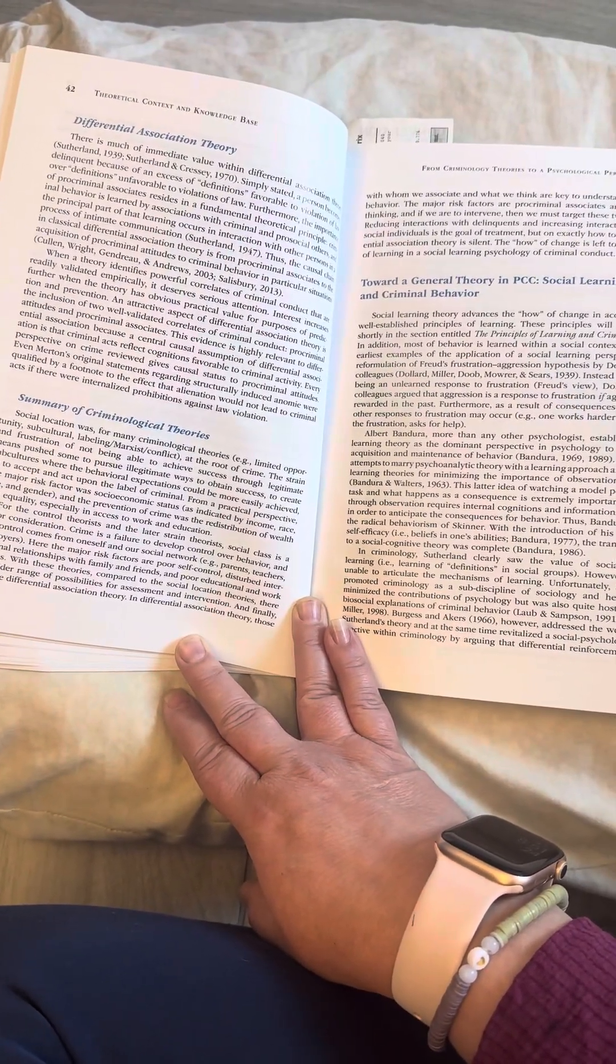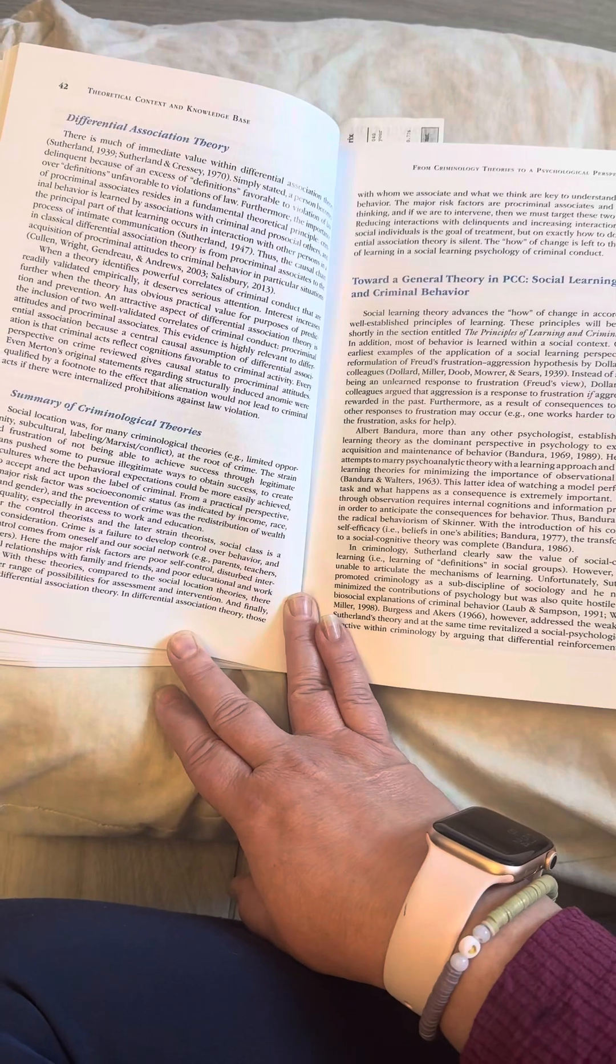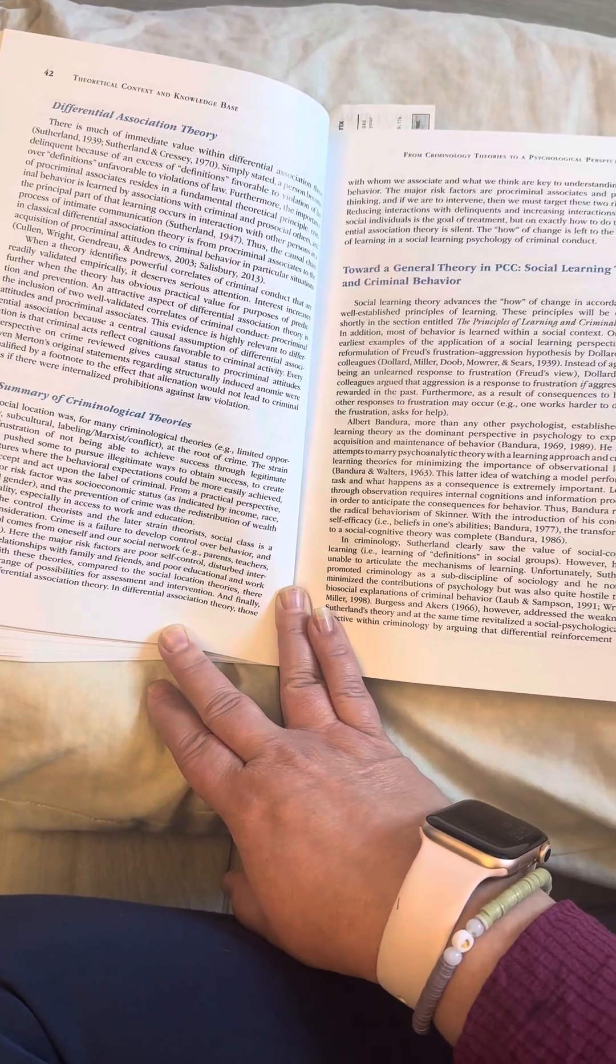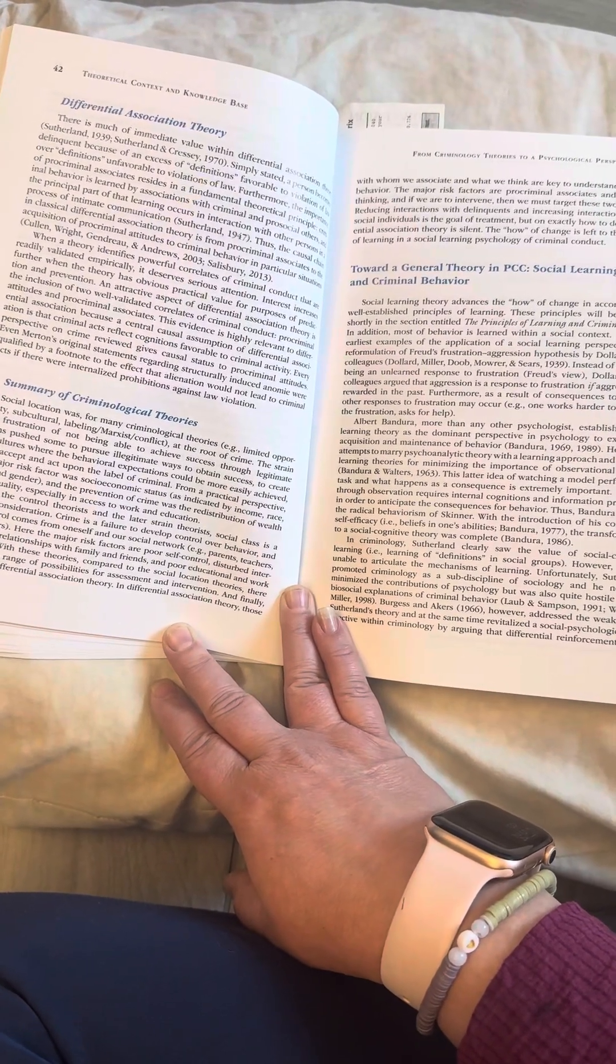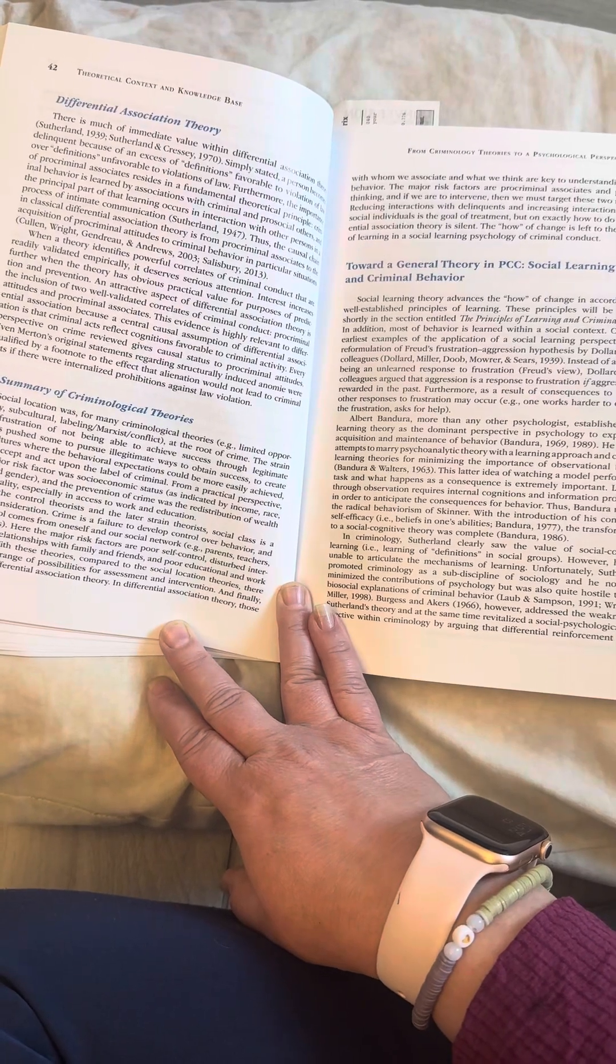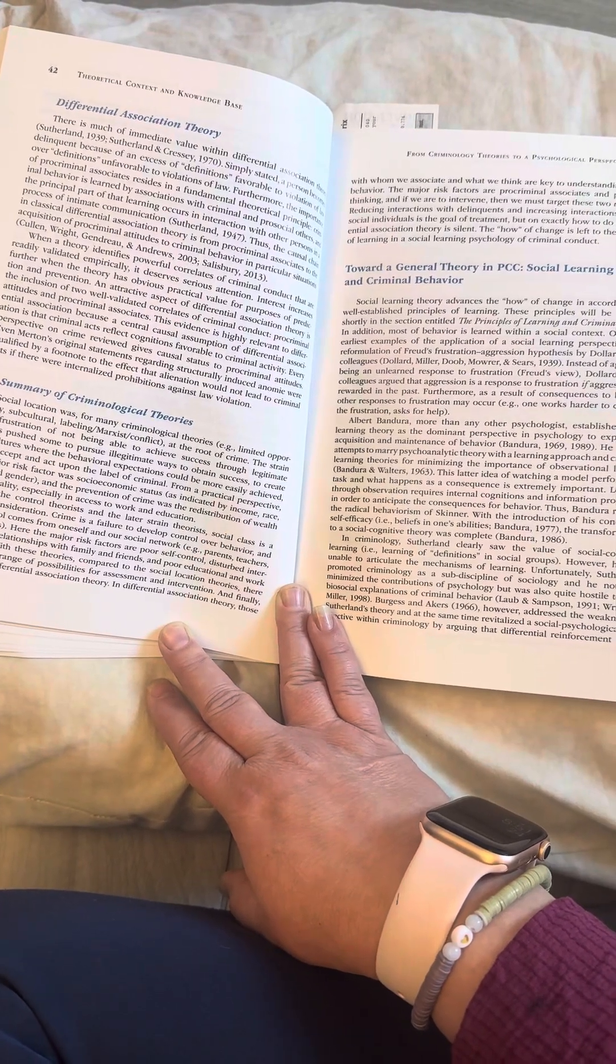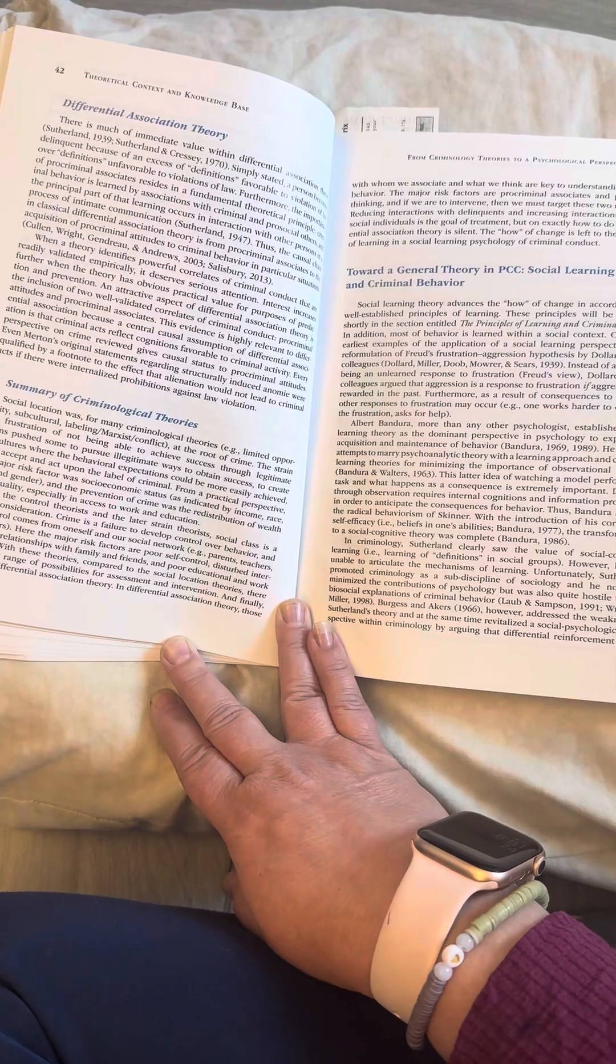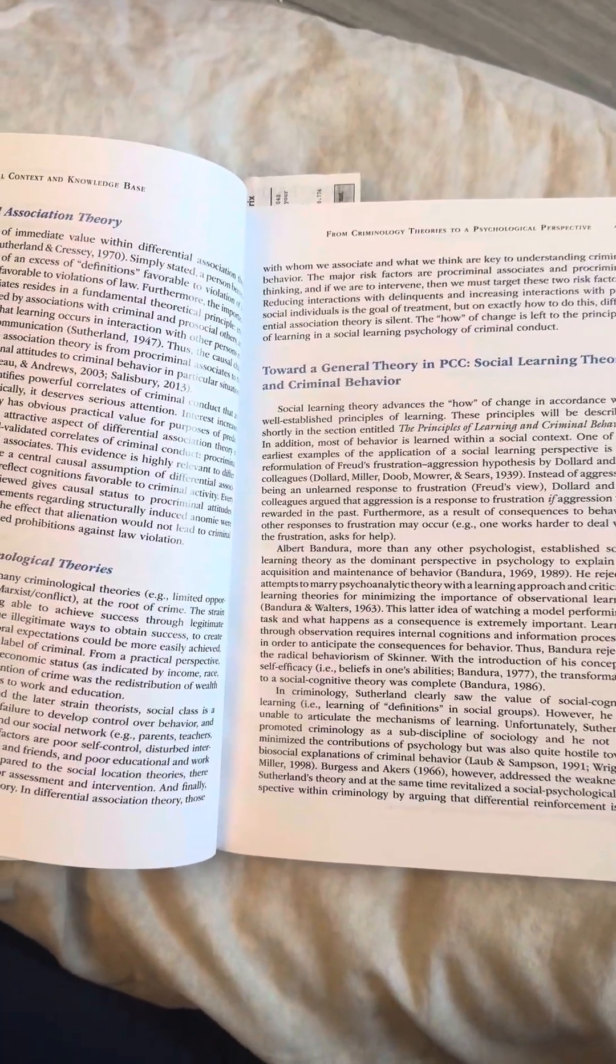For the control theorist and the later strain theorist, social class is a minor consideration. Crime is a failure to develop control over behavior, and the control comes from oneself and our social network. Example, parents, teachers, employers. Here are the major risk factors. Poor self-control, disturbed interpersonal relationships with family and friends, and poor educational and work success. With these theories compared to the social location theories, there is a wider range of possibilities for assessment and intervention. And finally, we have differential association theory. In differential association theory, those with whom we associate and what we think are key to understanding criminal behavior. The major risk factors are pro-criminal associates and pro-criminal thinking.